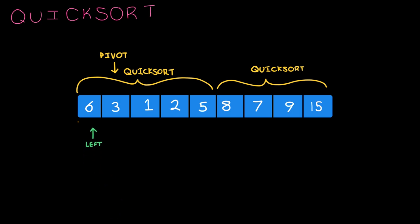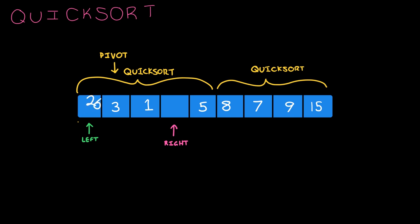So we have this left pointer and this right pointer again. We move the left pointer over until we have something that should be on the other side of 3, and move the right pointer over until we find elements to be swapped. So 2 is smaller than 3 and 6 is bigger than 3, so we want to swap those elements. Now move the left pointer over until it has something that should be swapped, and we're good. So now again we apply quicksort on each side.